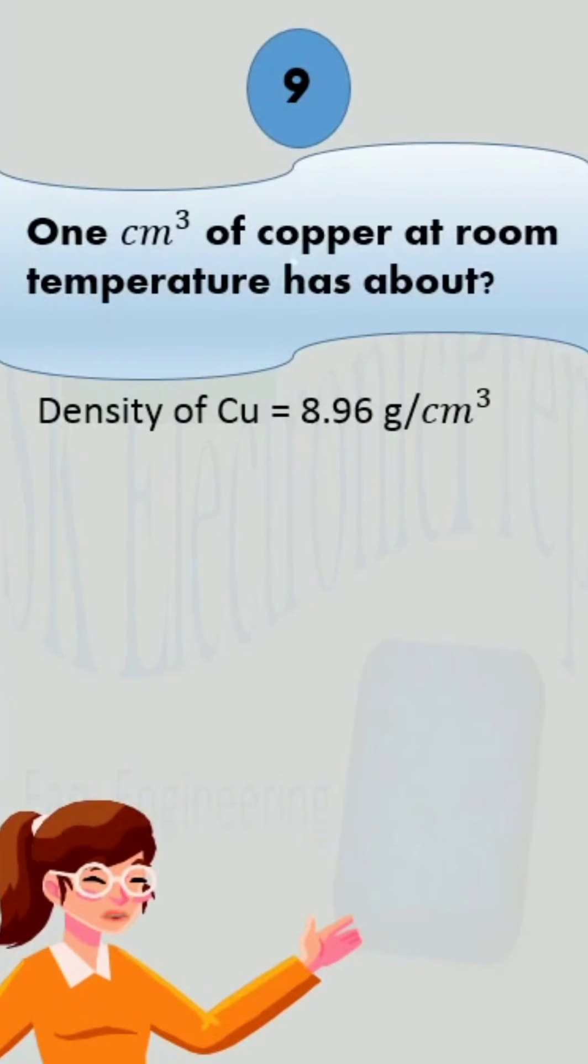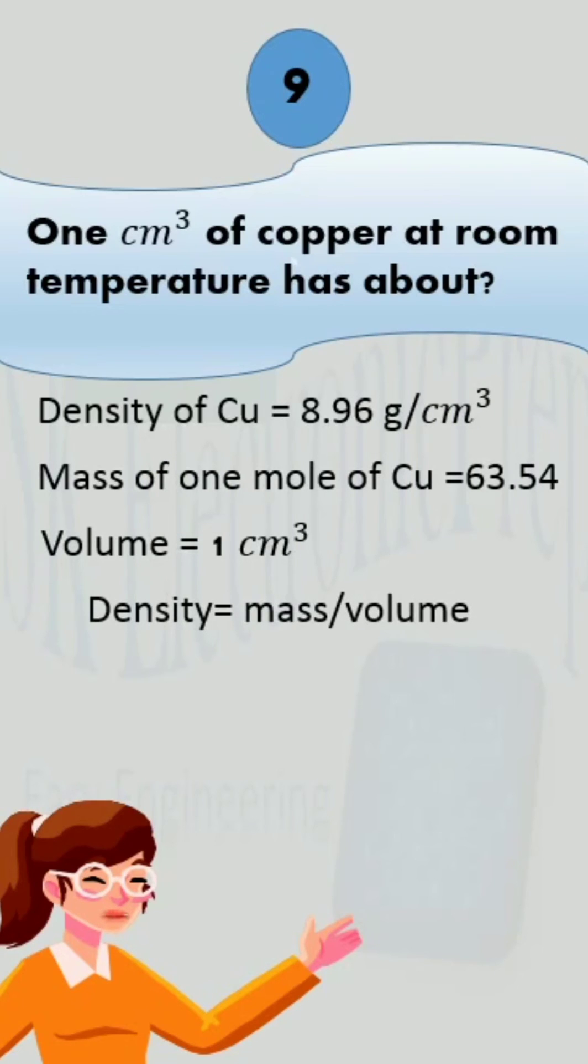We know that density of copper is 8.96 gram per cubic centimeter. Mass of one mole of copper is 63.5 atomic mass unit. Volume given is one cubic centimeter. Density formula is mass per unit volume.